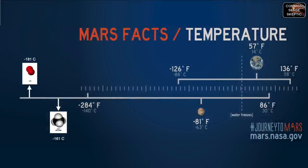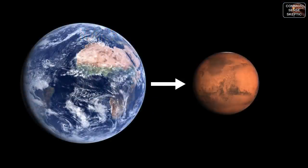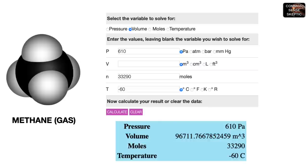But if you think those numbers are high, wait until we move them to Mars. To find the volume of 534 kilograms of methane gas on Mars, we take the 610-pascal atmospheric pressure, an average of minus 60 degrees Celsius, and the 33.290-kilomole value from the previous calculator. We discover that 534 kilograms of methane on Mars wants to expand 100 times — from 963.9 cubic meters to 96,712 cubic meters.